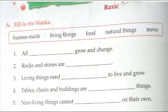The first question is: All dash grow and change. The answer is Living things — all living things grow and change. Second one: Rocks and stones are dash. The answer is Natural things. Third one: Living things need dash to live and grow. The answer is Food — living things need food to live and grow.